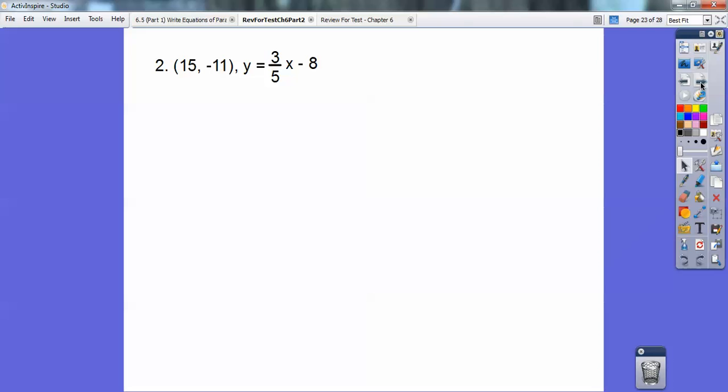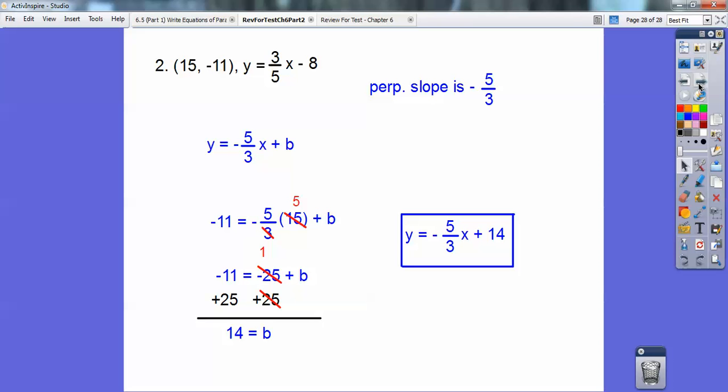I'll give you one more. I need the slope on that guy, 3 fifths. So a perpendicular slope is negative 5 thirds. If this one's positive, this one's negative. If this one was negative, then this one would have been positive. Here we go. y equals negative 5 thirds x plus b. Substitute that point in. And 3 goes into 15 five times. Negative 5 times 5 is negative 25. And I'm going to add 25 to both sides to get 14. And there's your answer. And so for your homework, I don't have a homework assignment out of the book. I'd rather you use that time to study for your test. This will be a great review for that.